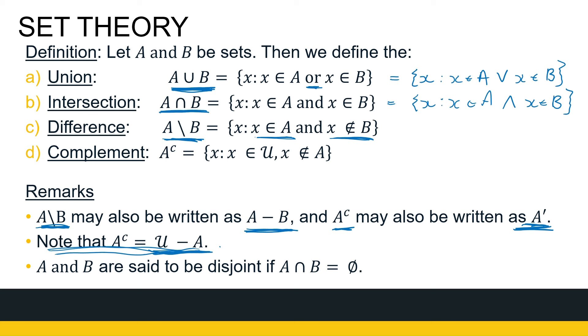And then just to note, disjoint, the word just disjoint, two sets are disjoint if their intersection is the empty set, meaning if those two sets have nothing in common, if on a Venn diagram there's nothing that they share, then they are called disjoint.